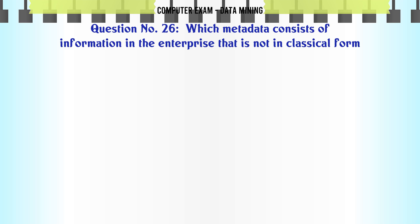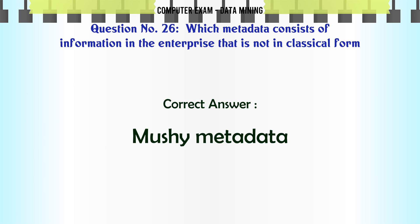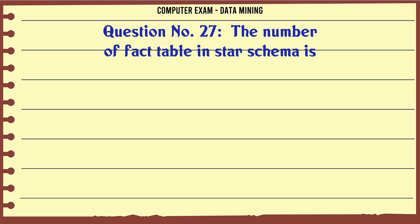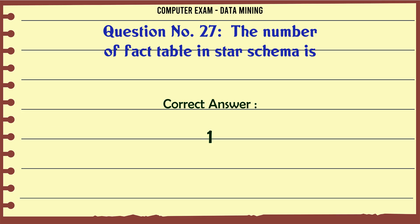Which metadata consists of information in the enterprise that is not in classical form? A. Linear metadata. B. Star metadata. C. Mushy metadata. D. Incremental metadata. The correct answer is Mushy metadata. The number of fact tables in star schema is: A. 1. B. 2. C. 3. D. 4. The correct answer is 1.